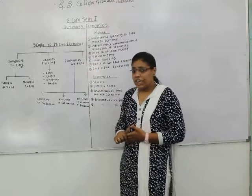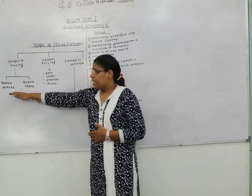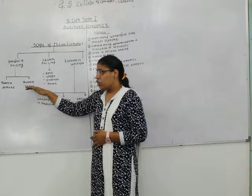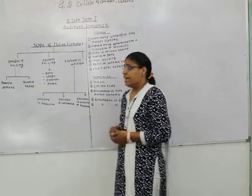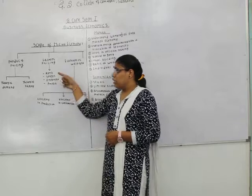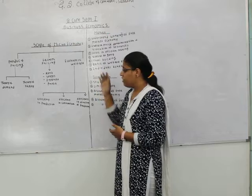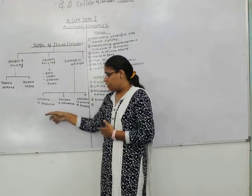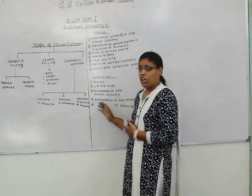The theory of product pricing is further divided into two parts: theory of demand, also known as analysis of consumer behavior, and theory of supply, also known as analysis of producer or supplier's behavior. Under theory of factor pricing we learn about rent, wages, interest and profits. The theory of economic welfare covers efficiency in production, efficiency in consumption, and efficiency in direction of production.